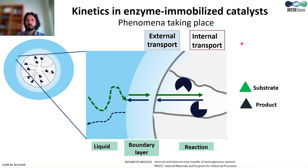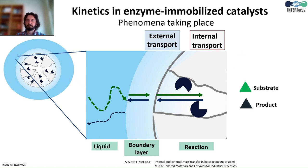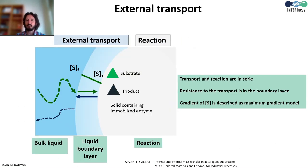Regarding the mass transfer, we can distinguish two steps. One is the external transport taking place from the bulk liquid through the boundary layer to the solid surface, and the internal transport taking place by diffusion through the pores of the solid material. The external transport is taking place in series with the biochemical reaction, while the internal transport is occurring simultaneously in the pores together with the biochemical reaction. We will see in more detail the two steps of transport and the interplay with the biochemical reaction.